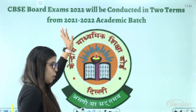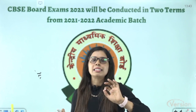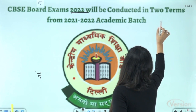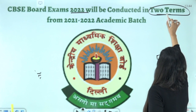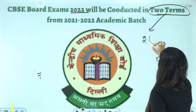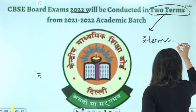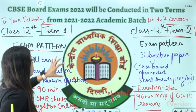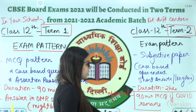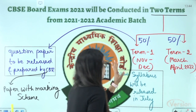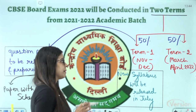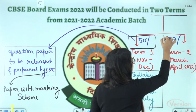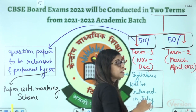The most important information from the CBSE announcement is that the CBSE board exam in 2022 will be conducted in two terms. It will be conducted in two terms. Now, in terms-wise, what is the variation? In Term 1 there will be 50% syllabus, and in Term 2 there will also be 50% syllabus.